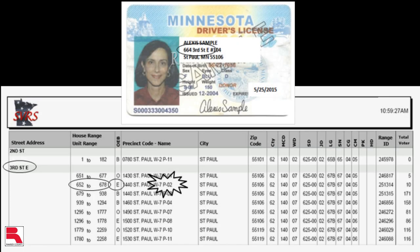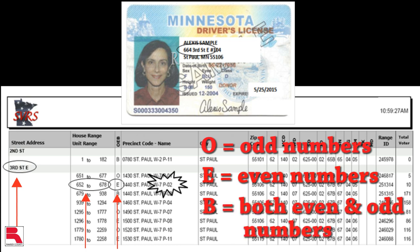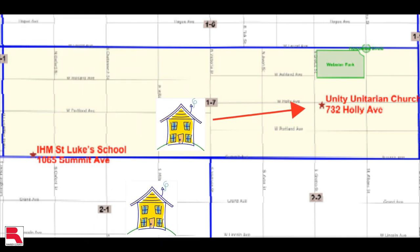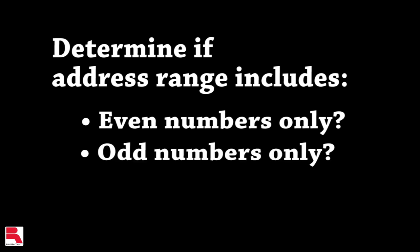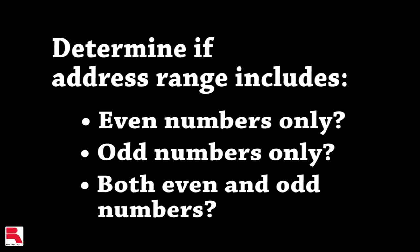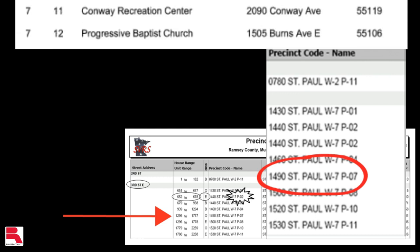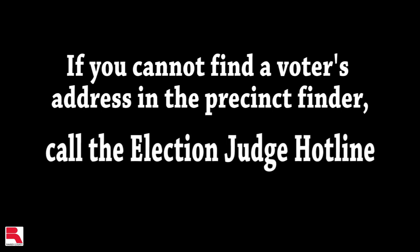To use the precinct finder, locate the Street Address column and find the voter's street name. In the House Range column, find the range in which the voter's house or apartment building number is included. Determine if the voter's house number falls in a range of odd numbers only, even numbers only, or both even and odd numbers. Because some streets serve as precinct boundaries, individuals who live on one side of the street may vote at a different polling place than individuals on the other side. Therefore, it is important to determine whether an address range includes only even numbers, only odd numbers, or both. In the Precinct Codename column, determine the ward and precinct in which the voter must vote. If a voter is at the wrong polling place, use the polling place address list in the front of the precinct finder to direct the voter to the correct location. If a voter's address cannot be found in the precinct finder, please call the Election Judge Hotline and staff can verify where the voter should vote.